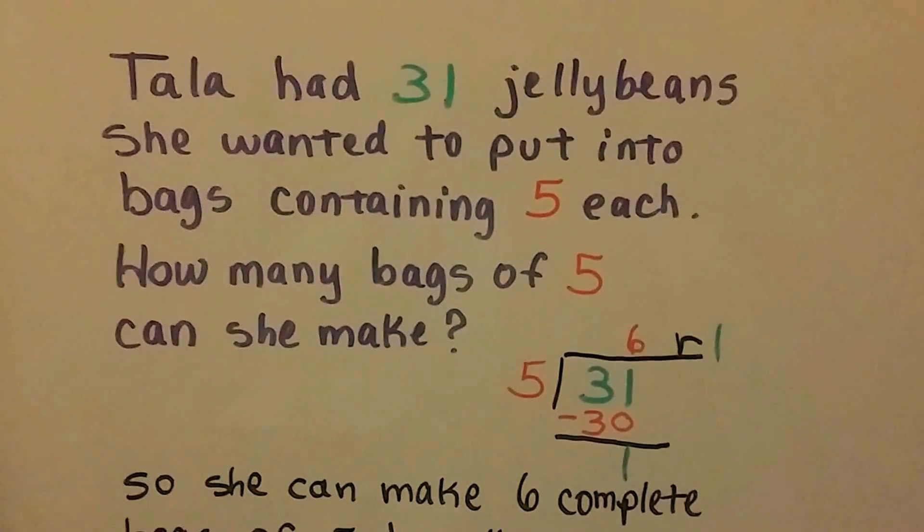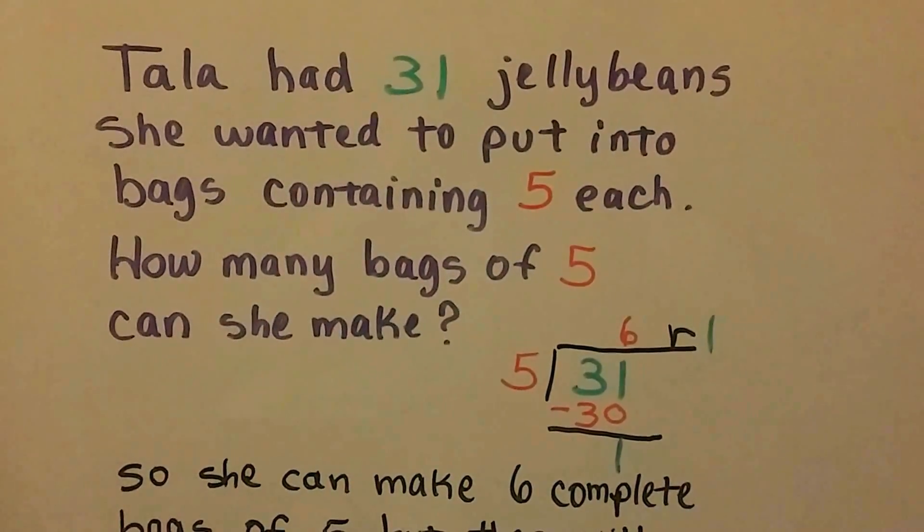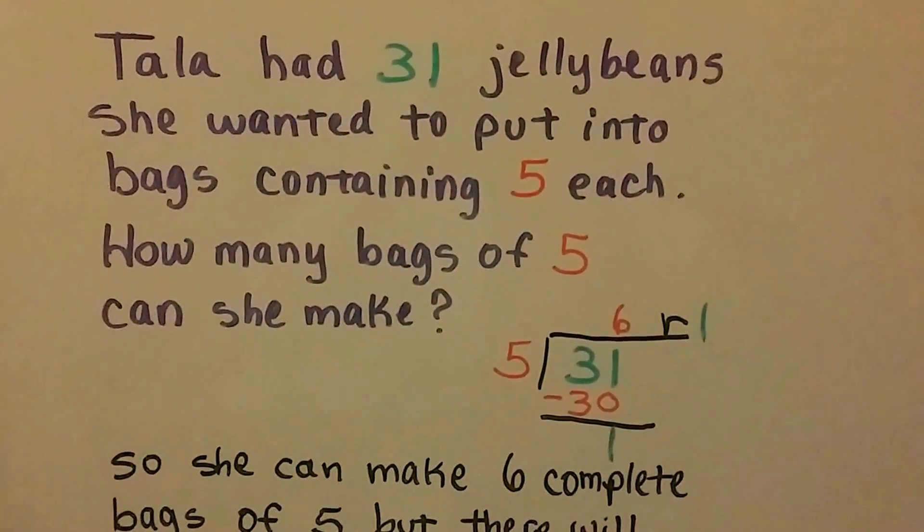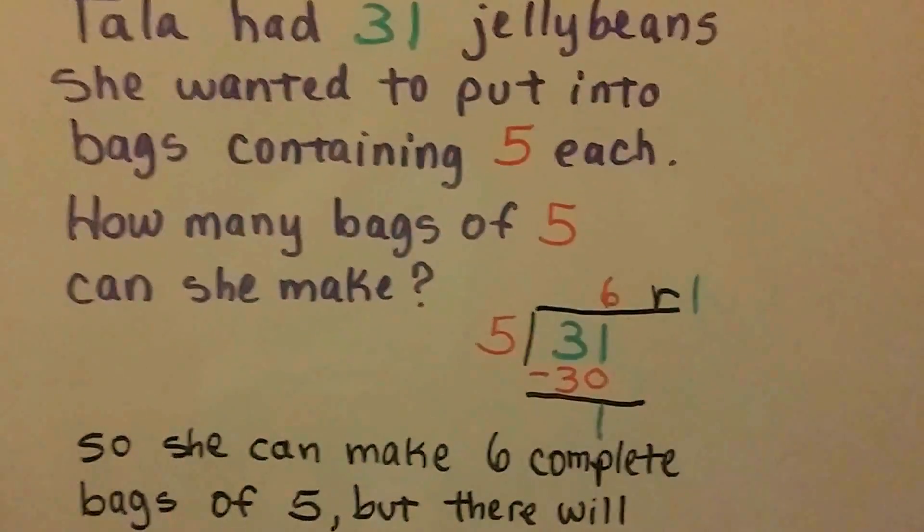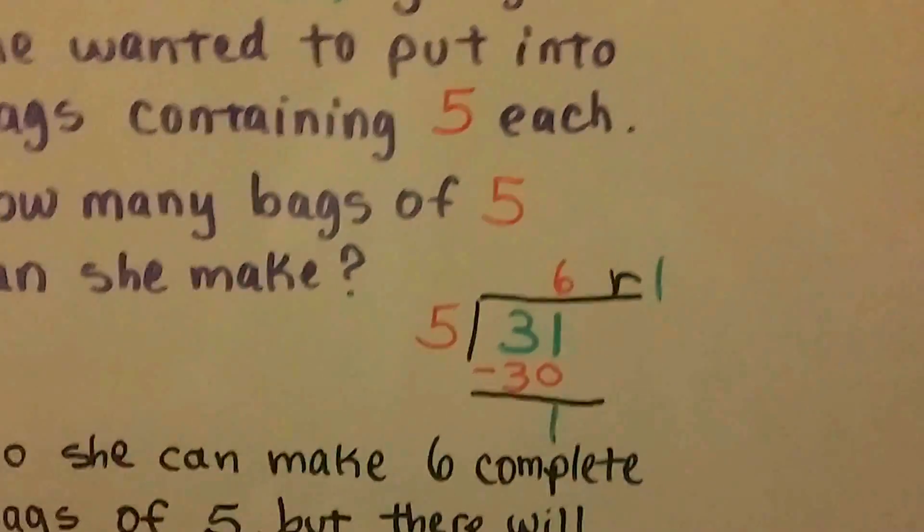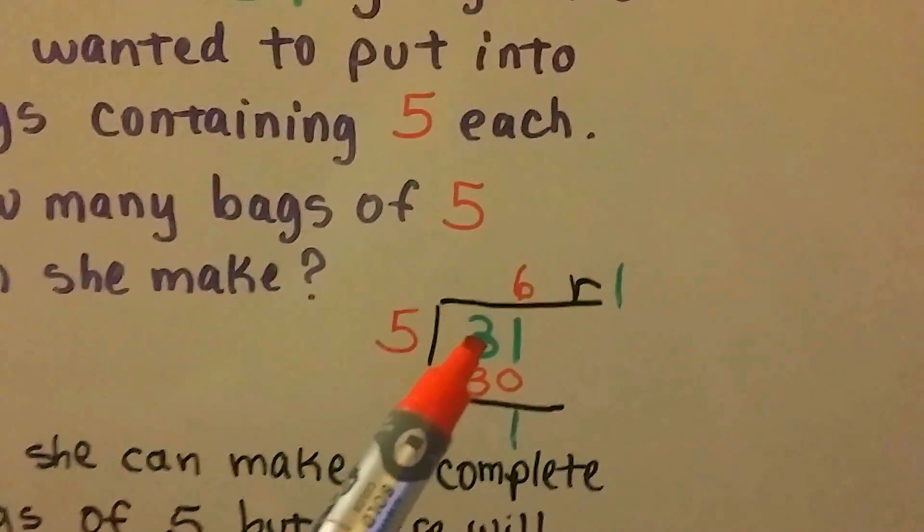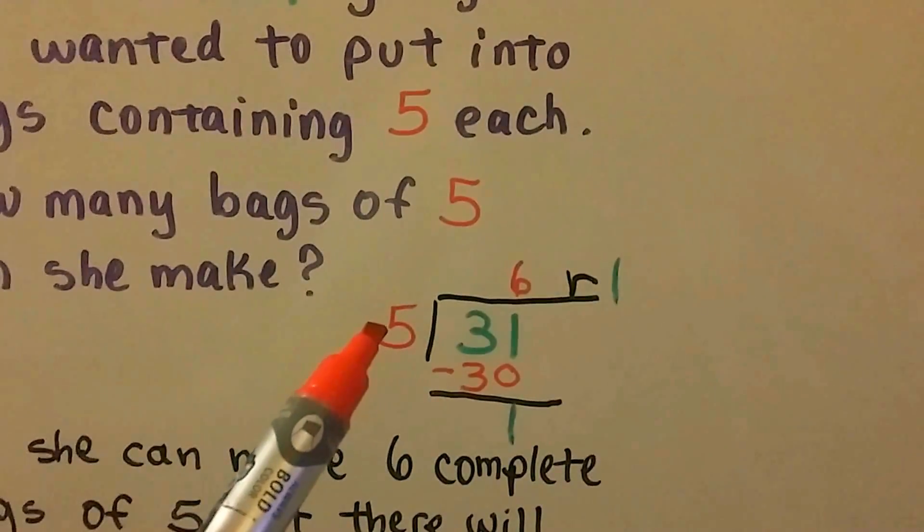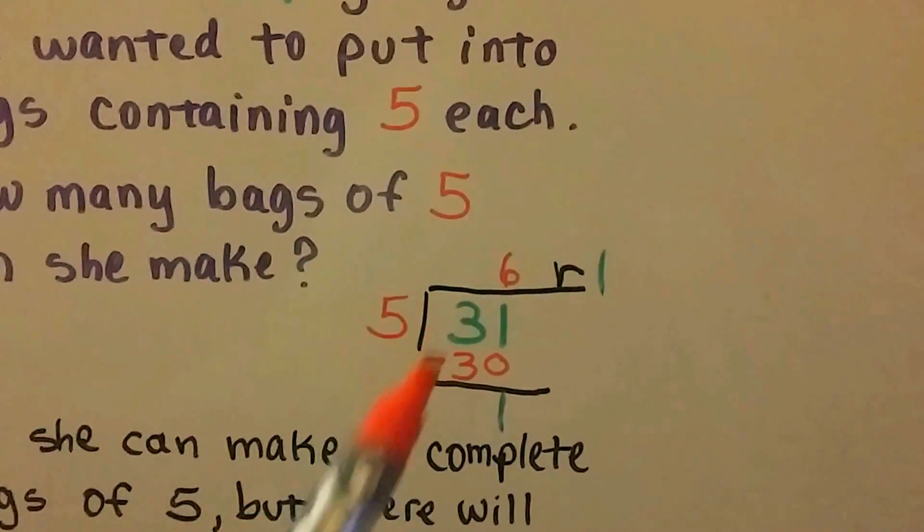Tala has 31 jelly beans she wanted to put into bags containing 5 each. So how many bags of 5 can she make? We do a small long division problem and we put the 31 in as the dividend and the 5 as the divisor. How many times can 5 go into 31?